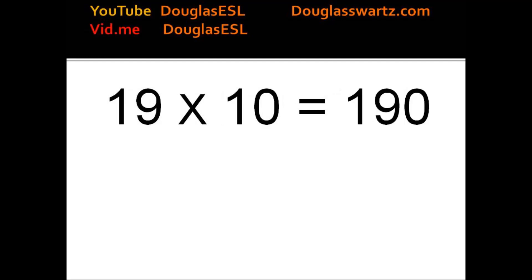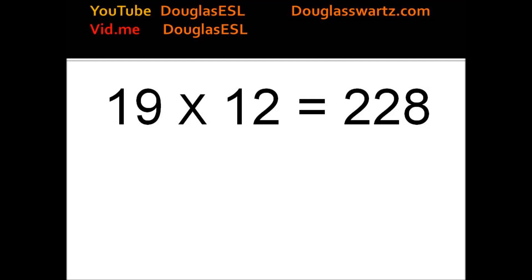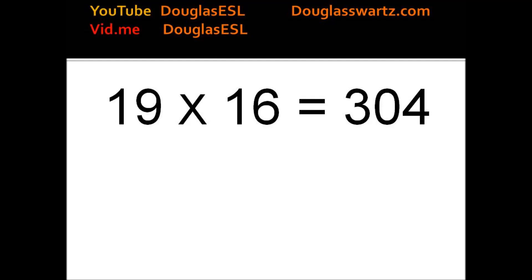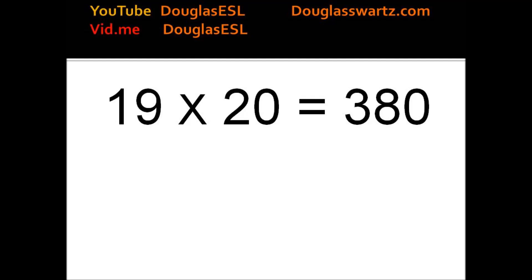19 times 9 equals 171. 19 times 10 equals 190. 19 times 11 equals 209. 19 times 12 equals 228. 19 times 13 equals 247. 19 times 14 equals 266. 19 times 15 equals 285. 19 times 16 equals 304. 19 times 17 equals 323. 19 times 18 equals 342. 19 times 19 equals 361. 19 times 20 equals 380. 19 times 21 equals 399.